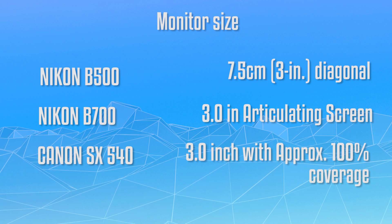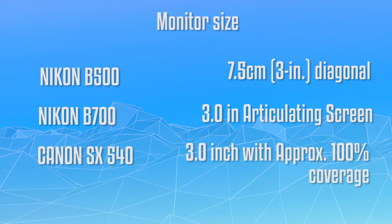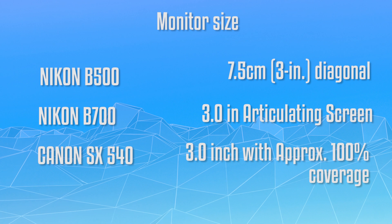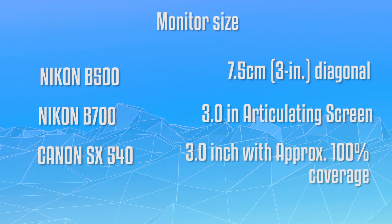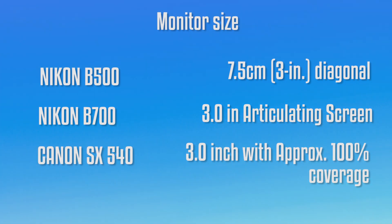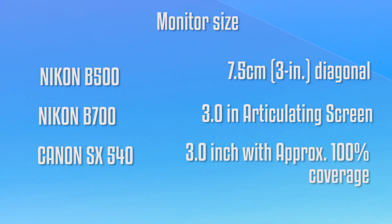The B700 has an articulating screen, which means you can rotate the screen and see yourself when shooting a video. The Canon SX 540 also has a 3 inch display with approximately 100% coverage.